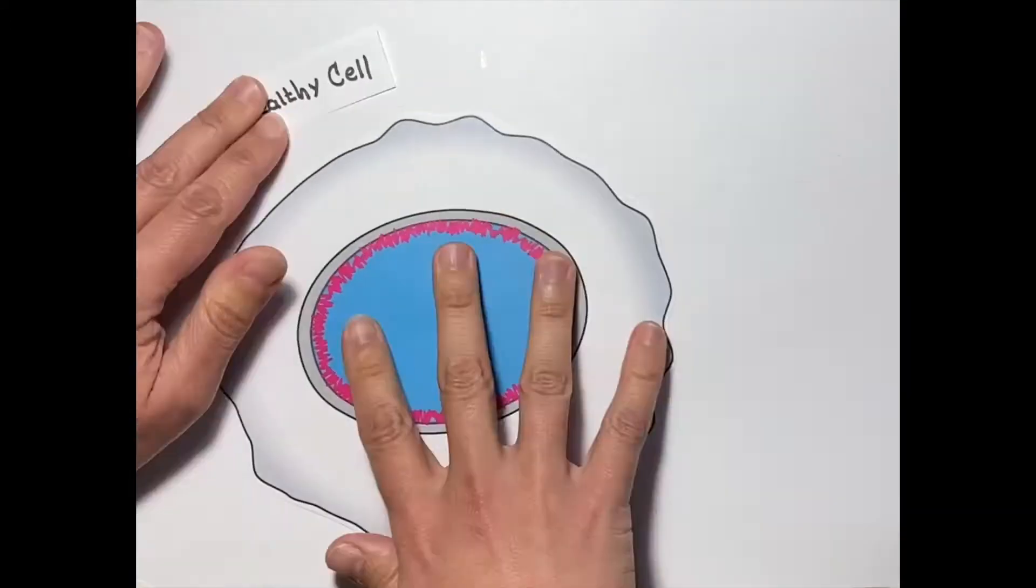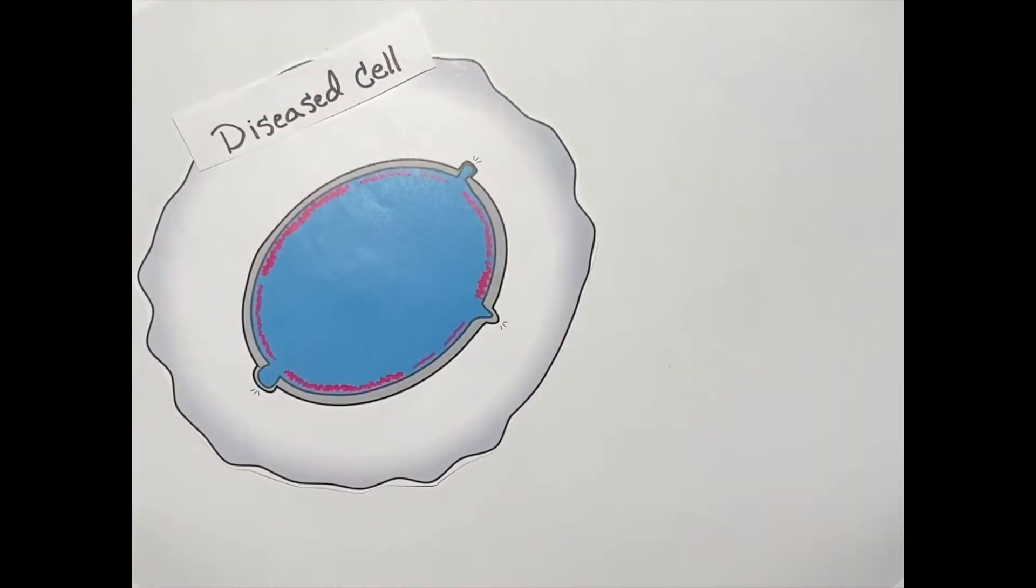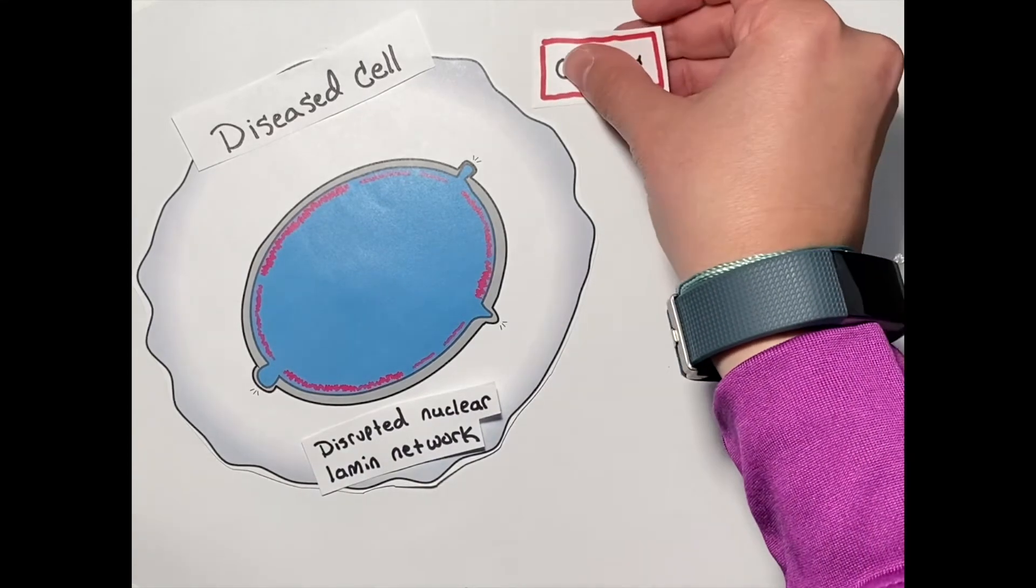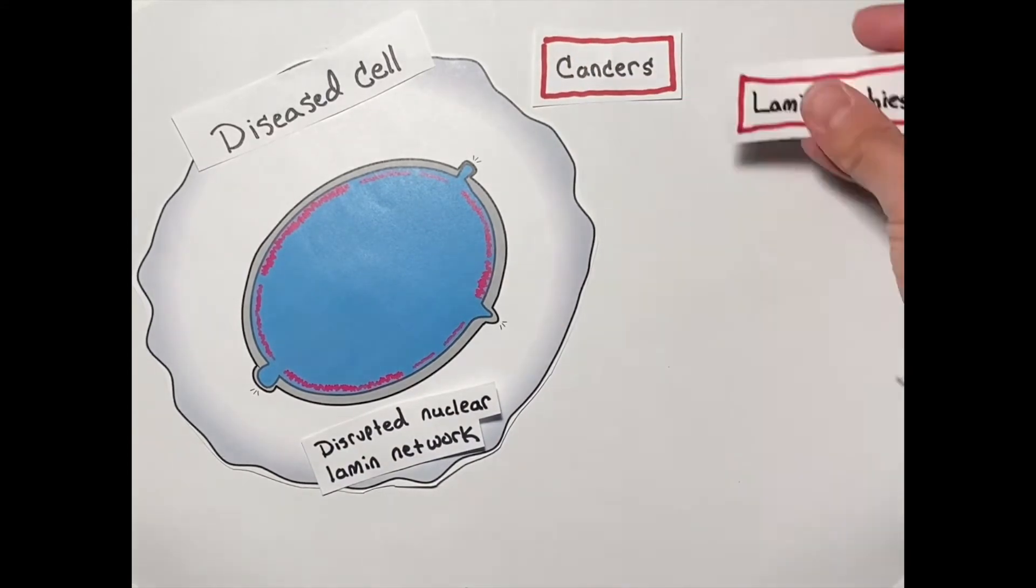Nuclear ruptures can happen when healthy cells are under a lot of pressure, for example, while migrating through confined spaces that squeeze the nucleus. These ruptures are more frequent when the nuclear lamin network is disrupted in diseases, including solid tumor cancers and laminopathies.